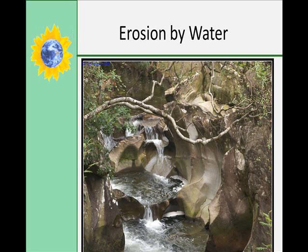The largest and heaviest particles are rolled or bounced along the stream bed in traction. Sediments of low density, particularly organic remains, will be carried along the surface of the water by flotation. The smallest particles in suspension, solution, or flotation are carried at the same velocity as the water itself. Those carried in traction move more slowly. The general rule is that the bigger the sediment, the faster the water has to be moving to transport it.